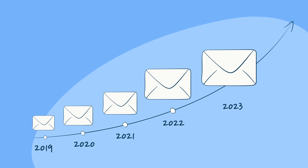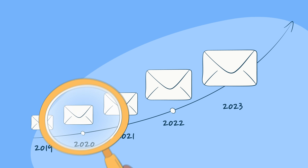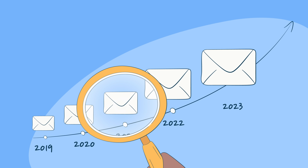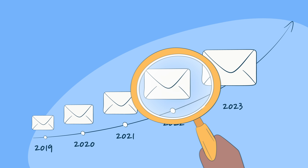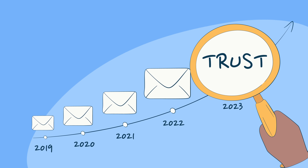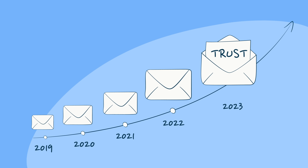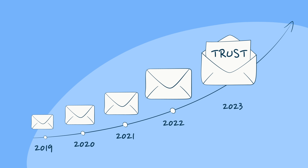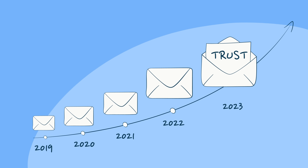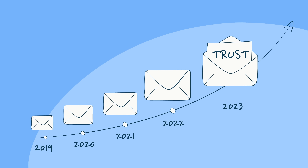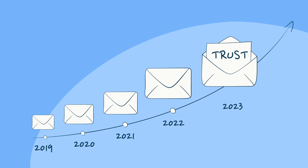Over the years of email growth, keeping a close eye on deliverability has become crucial in effective communication and building trust with your audience. It's not just about sending emails, but ensuring they land in the right place and get the proper engagement. And for that to happen, you have to track your metrics.